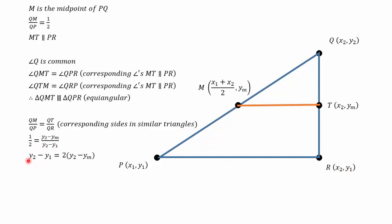Cross multiplying, get y2 minus y1 on the left hand side, 2 bracket y2 minus ym on the right hand side. Expand the brackets on the right hand side. And then bring everything that was on the right hand side to the left, and everything that was on the left to the right, because I want to change my ym to be positive and on the left hand side.